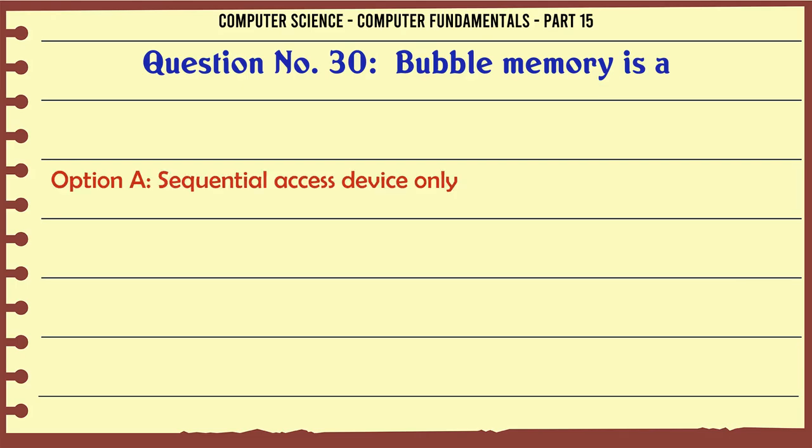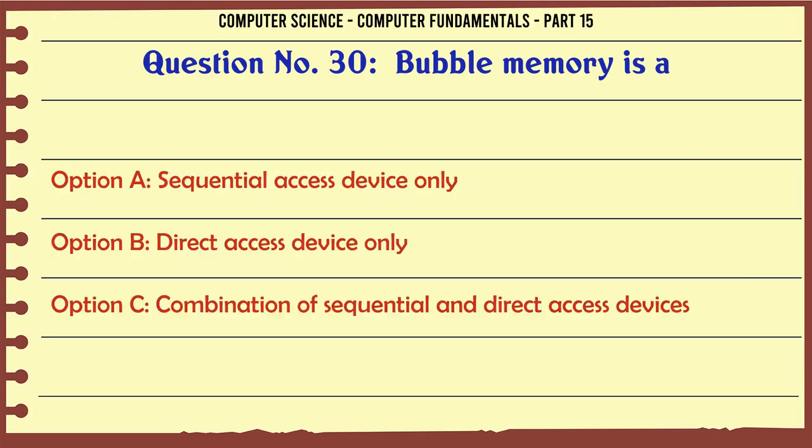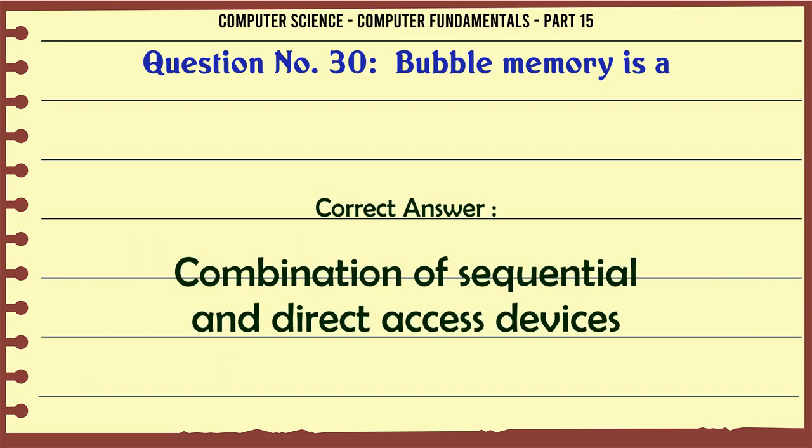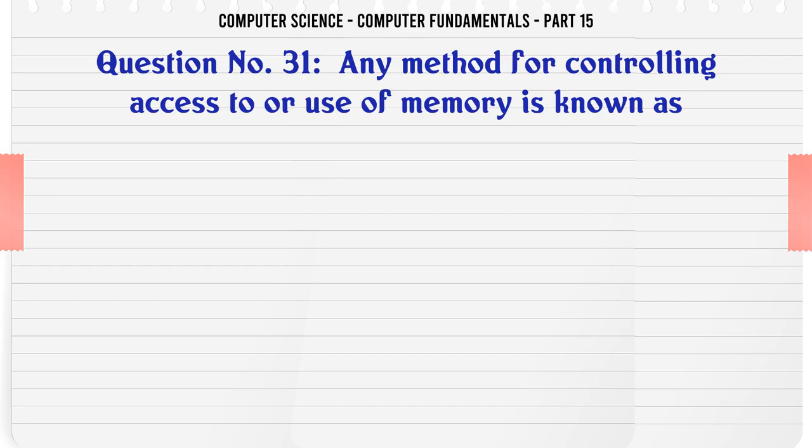Bubble memory is: A. Sequential Access Device Only B. Direct Access Device Only C. Combination of sequential and direct access devices D. All of the above. The correct answer is Combination of sequential and direct access devices.